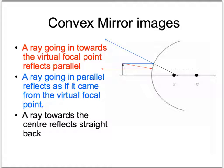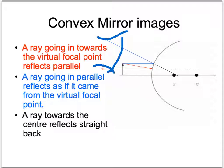A convex mirror is always going to give you a virtual image. The ray going in towards the virtual focal point comes out parallel; the ray going in parallel reflects as if it came from a virtual focal point; and the ray towards the center stays straight. These rays are never going to meet, but if you look down the rays, you'll see a small virtual image. The image in a convex mirror — a diverging mirror — is always virtual, always upright, and always smaller.